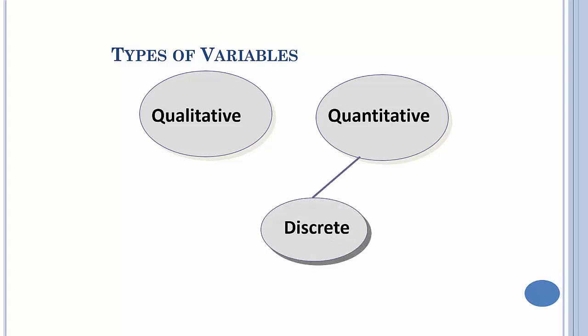And if they're quantitative, they're either discrete or continuous. Discrete basically means there's gaps in between them. Discrete data is usually counted.